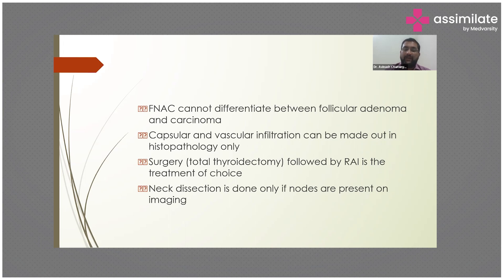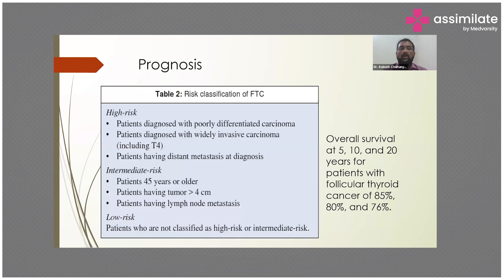In any differentiated thyroid carcinoma — PTC and FTC — you try to remove all removable thyroid tissue anywhere in the body, generally in the neck, and use radioactive iodine for metastatic lesions. For prognosis, it is a well-differentiated carcinoma with good outcomes: 5-, 10-, and 20-year overall survival rates are 85%, 80%, and 76% respectively, and patients generally do very well.